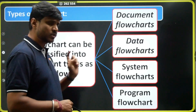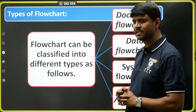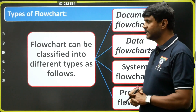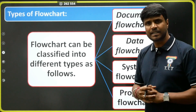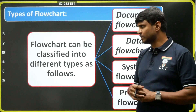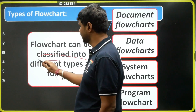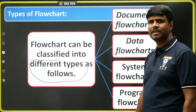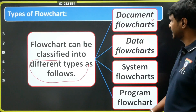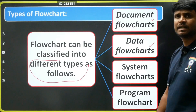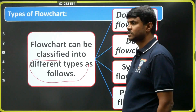Next topic: different types of flowchart. This is also very important. The flowchart is again classified into different types — we have four types. The first one is a document flowchart, the next one is a data flowchart, the next one is a system flowchart, and the last one is called a program flowchart.